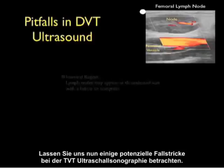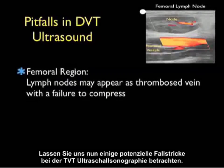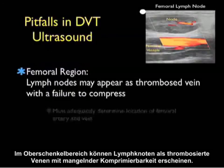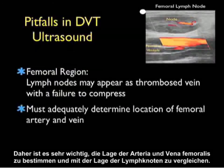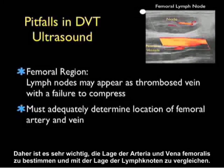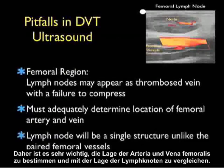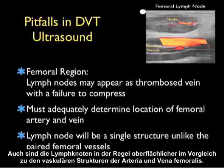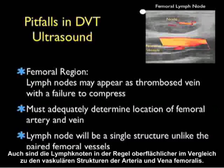Now let's turn to a discussion of some potential pitfalls within DVT ultrasonography. In the femoral region, lymph nodes may appear as a thrombosed vein with a failure to compress on bedside sonography. Therefore, it's very important to adequately determine the location of the femoral artery and vein and compare that to the location of the lymph node. The lymph node will be a single structure unlike the paired femoral vessels, and the lymph node will usually be seen more superficial to the vascular structures of the femoral artery and vein.